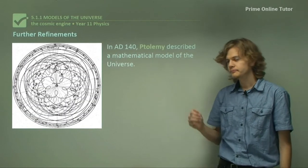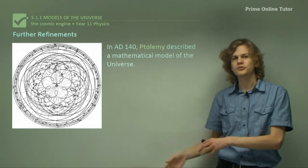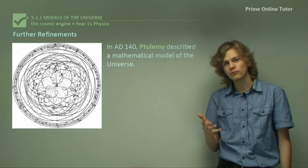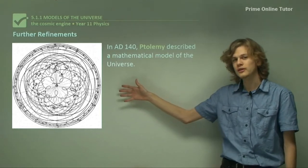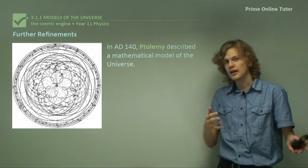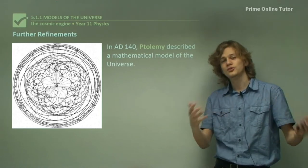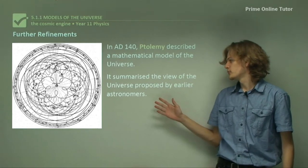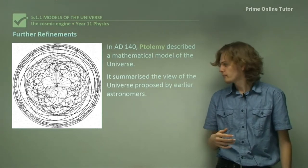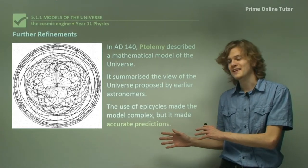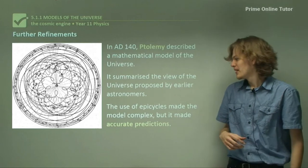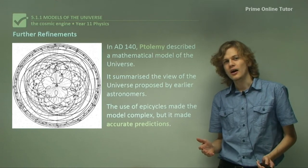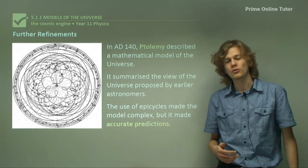Now, in AD 140, Ptolemy took all the ideas of the universe, the slightly off-center Earth, the epicycles, and Aristotle's original idea, and described a very mathematical model of the universe. You can see the little epicycles that the various different celestial bodies are making as they go around the Earth. It summarized the view of the universe proposed by all the earlier astronomers. The use of epicycles made the model complex, but it made very accurate predictions, especially compared to Aristotle's original model. For this reason, it remained dominant for over 1,000 years.